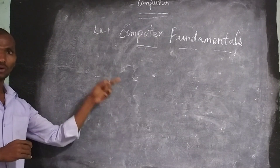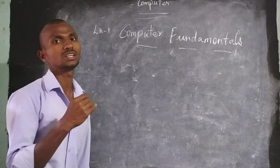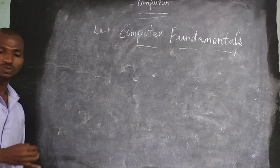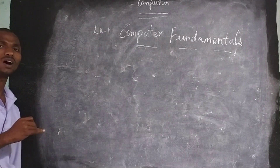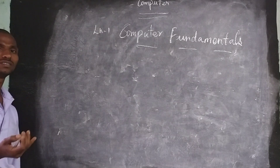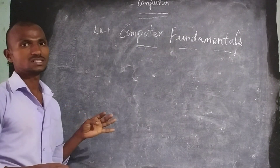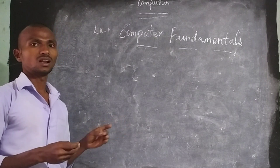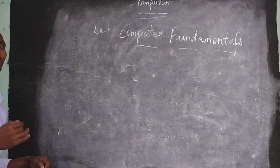Now we are looking at the basics — what are the basics we need to follow in the computer. To communicate with the computer, we need hardware: input devices and output devices. As software, there are also things we need to know.